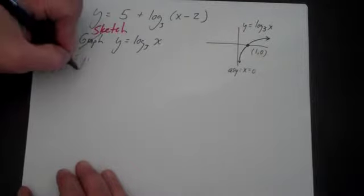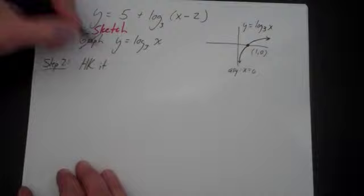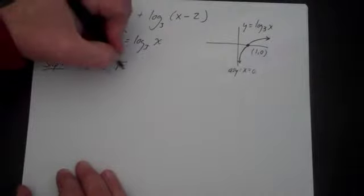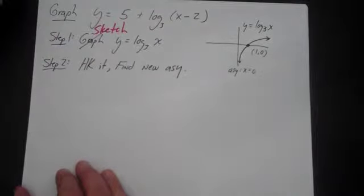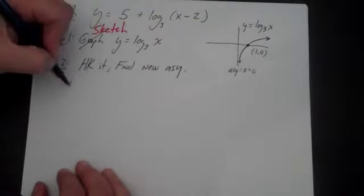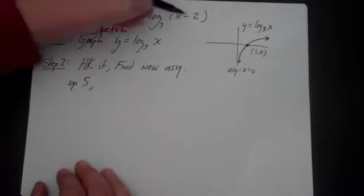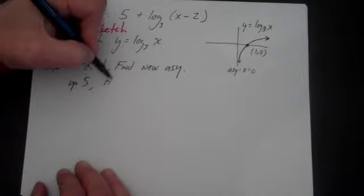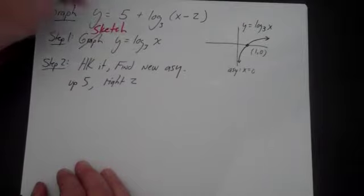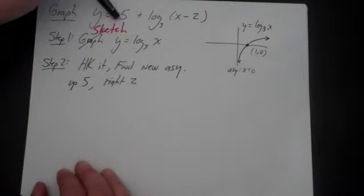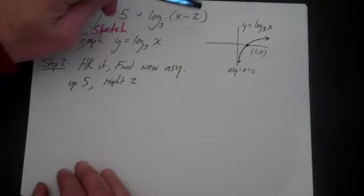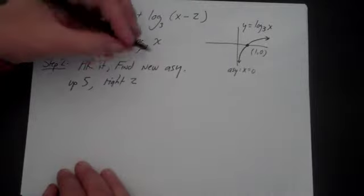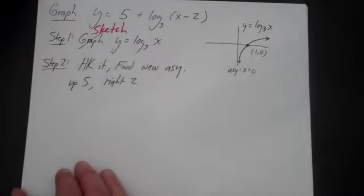Step 2 is now I'm going to h,k it. And I'm going to find the new asymptote. So let's think about this. In this case, the 5 moves it up 5. And the 2 is going to move it right 2. Now why up 5 and right 2? Well, the 5 is the k and that moves it up and down. And the h moves it left and right. But the h, since it's inside the function, it changes signs. Since it's a negative 2, it's going to be positive 2. So you're going to move it left and right in a positive 2 direction.